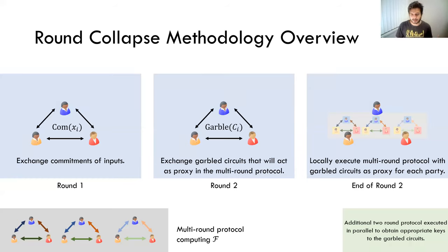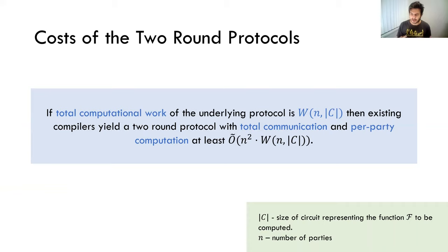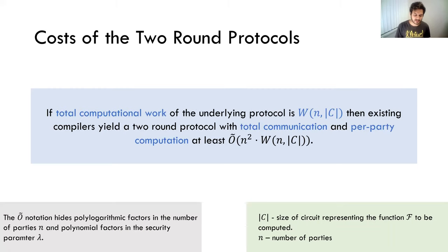This is a really cool technique that gives us two-round protocols, but it comes at a cost. Specifically, if you start with a multi-round protocol that has total computational work W — where W is a function of the number of parties and the size of the circuit representing the function — then all of these compilers give you a multiplicative overhead of n² when it comes to total communication or per-party computation in the resulting two-round protocol.